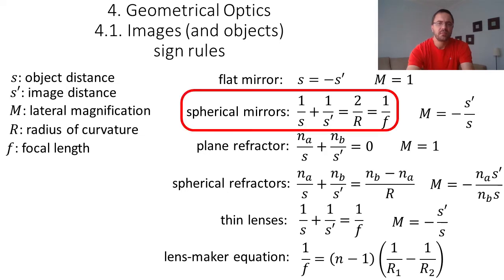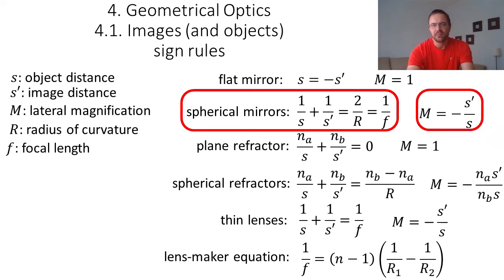For example, for a spherical mirror we have the relation: 1 over s plus 1 over s prime equals 2 over r, which is also equal to 1 over f. The magnification is given by minus s prime over s. We will also see similar formulas for spherical refractors and thin lenses.